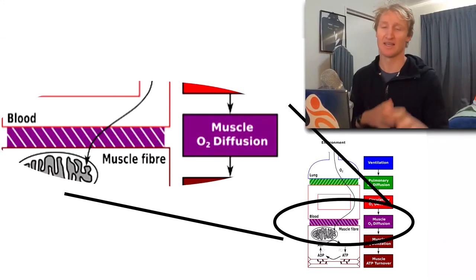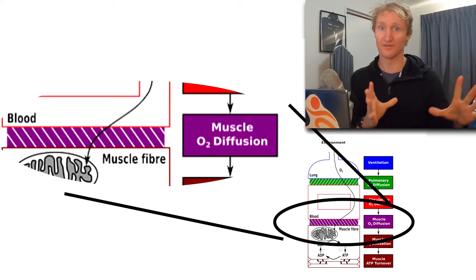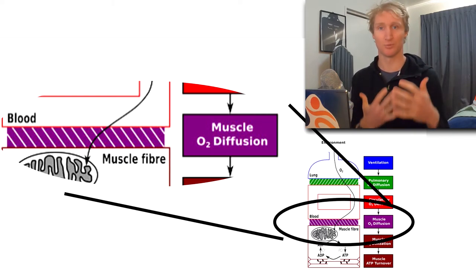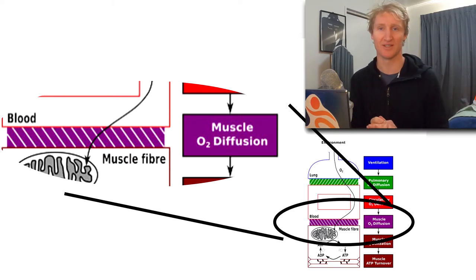Now we get the blood to the working muscle through whatever means necessary. We need to get the oxygen out of the blood and into the working muscle. Again, that comes down to pressure gradients and the amount of myoglobin and hemoglobin we have in our system. Hemoglobin carries oxygen in the blood, myoglobin carries oxygen in the tissue, and specifically in this case, the muscle cell.